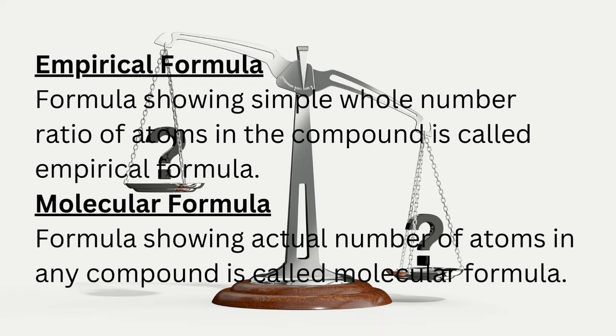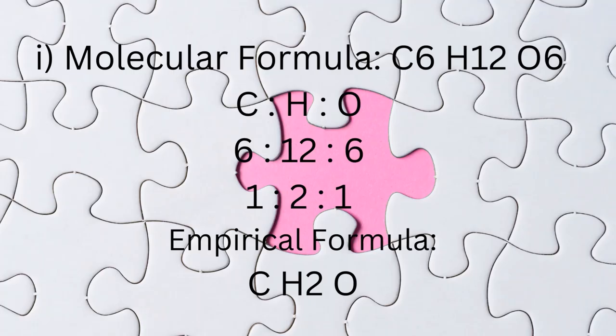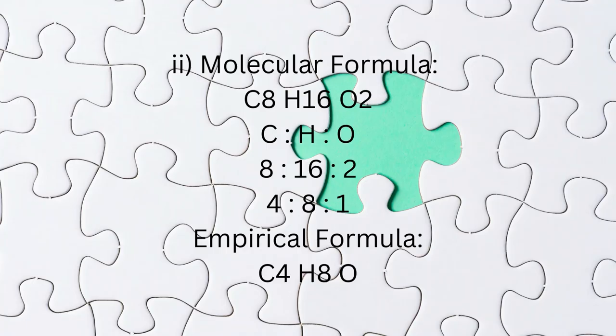First, molecular formula C6H12O6. Ratio C:H:O is 6:12:6. Simplest ratio is 1:2:1. Therefore, empirical formula of C6H12O6 is CH2O.